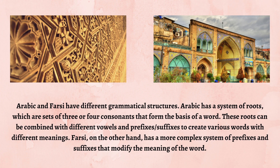Arabic and Farsi have different grammatical structures. Arabic has a system of roots, which are sets of three or four consonants that form the basis of a word. These roots can be combined with different vowels and prefixes and suffixes to create various words with different meanings. Farsi, on the other hand, has a more complex system of prefixes and suffixes that modify the meaning of the word.